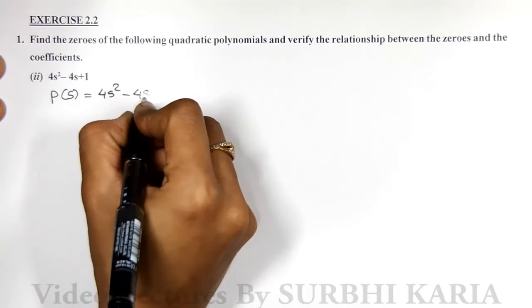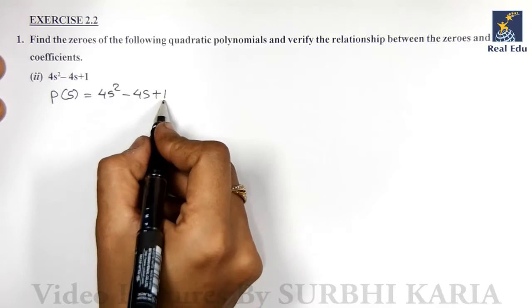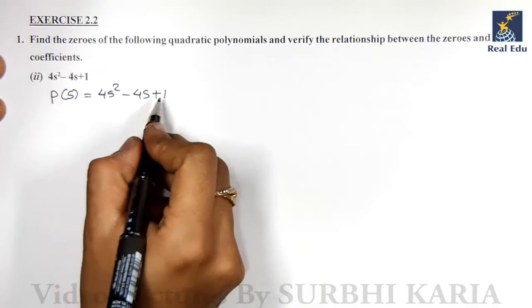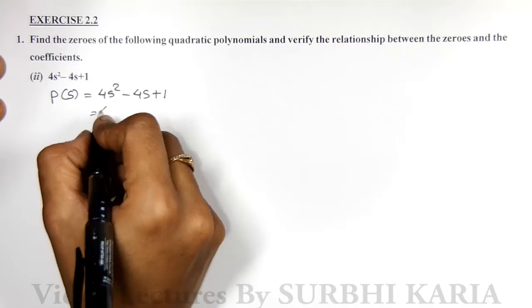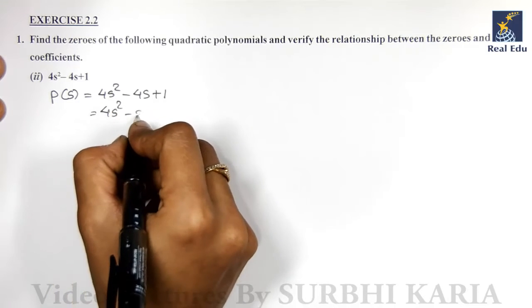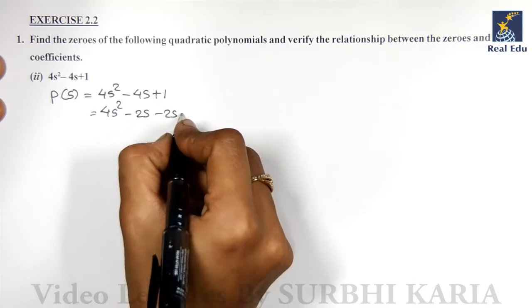4s² - 4s + 1. Multiplying 1 and 4, we get 4 itself. Two factors of 4: 4s² - 2s - 2s + 1.